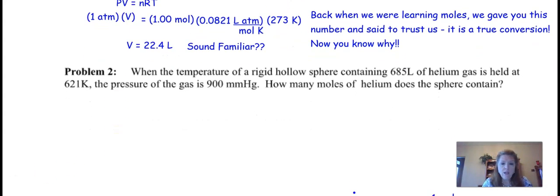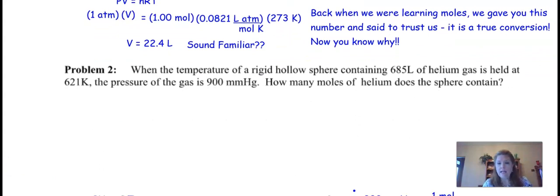Let's look at problem number two. When the temperature of a rigid hollow sphere containing 685 liters of helium gas is held at 621 Kelvin, the pressure of the gas is 900 millimeters of mercury. How many moles of helium does that contain? Let me just do something real quick. I don't want this to be just 900. I want this to be 900 point. I don't like three or one sig fig. So we know that we have temperature and liters and here's my temperature and pressure. What's missing? It's missing moles. So if moles are missing, we need PV=nRT. There's my PV=nRT.